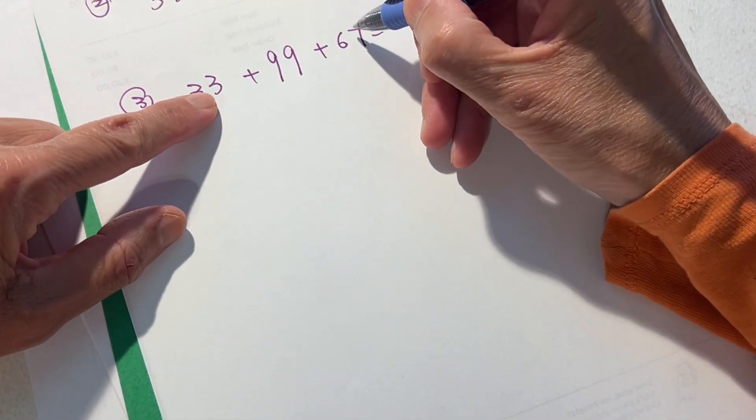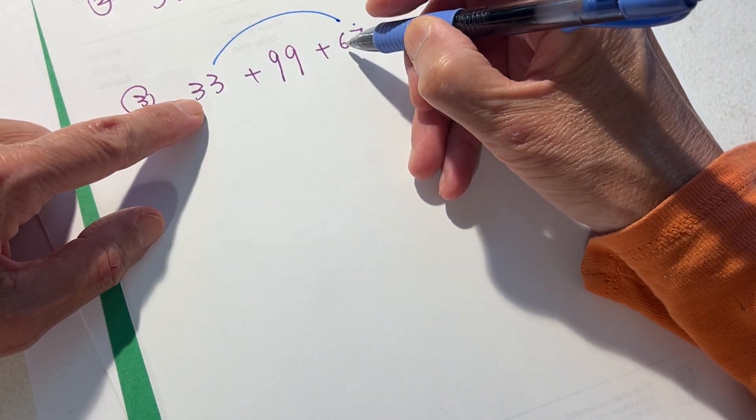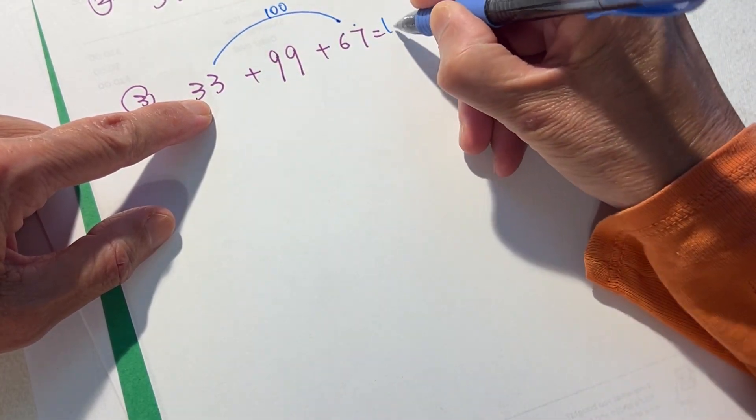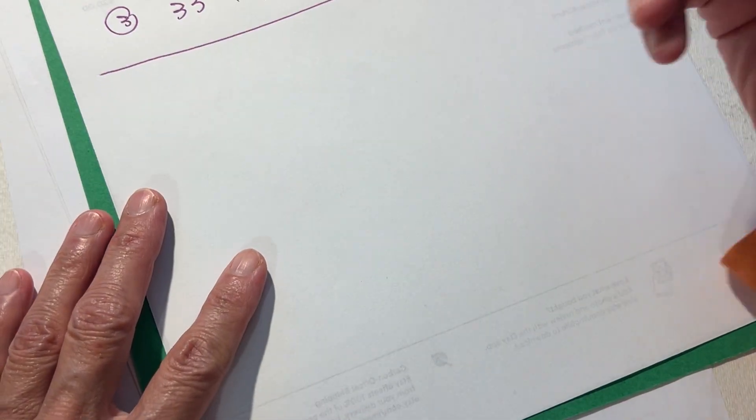Do I make any sense? So this one, seven and three works well. Three and six, nine. Okay, one hundred, one hundred ninety-nine.